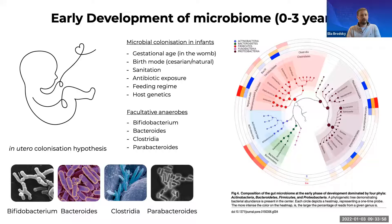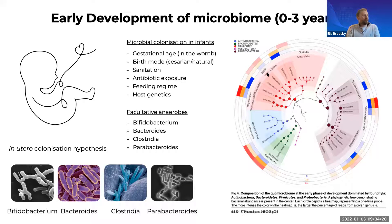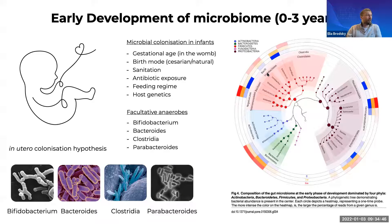We're focusing on infants between zero and three years. Some of the key factors include gestational age — how long the baby stays in the womb — the birth mode, for example cesarean or natural, sanitation, antibiotic exposure, which is a major one, as well as host genetics. Several studies have focused on understanding these factors in detail, and we now have evidence of how composition changes and how the presence or absence of specific bacteria can be linked to these factors. In the early ages, because this is an anaerobic condition, specific types of bacteria start developing.